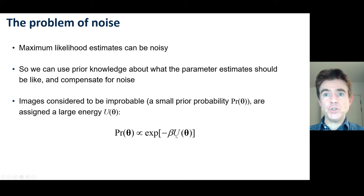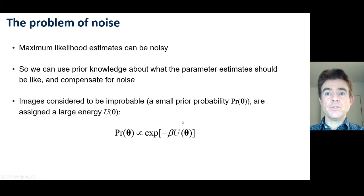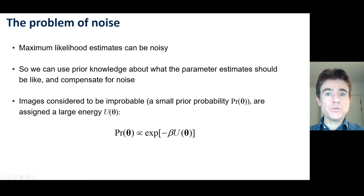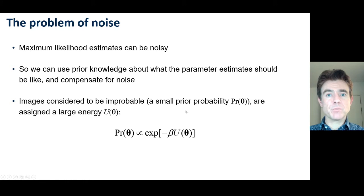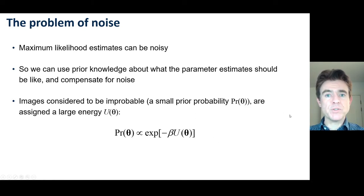A small value of the energy u gives rise to a high probability, whereas a noisy image gives rise to a large value of u, which results in a small probability. We then include this prior probability with the Poisson likelihood to get our maximum a posteriori objective function, and seek to maximise that objective whilst accounting for our prior probabilities of what the images should look like.